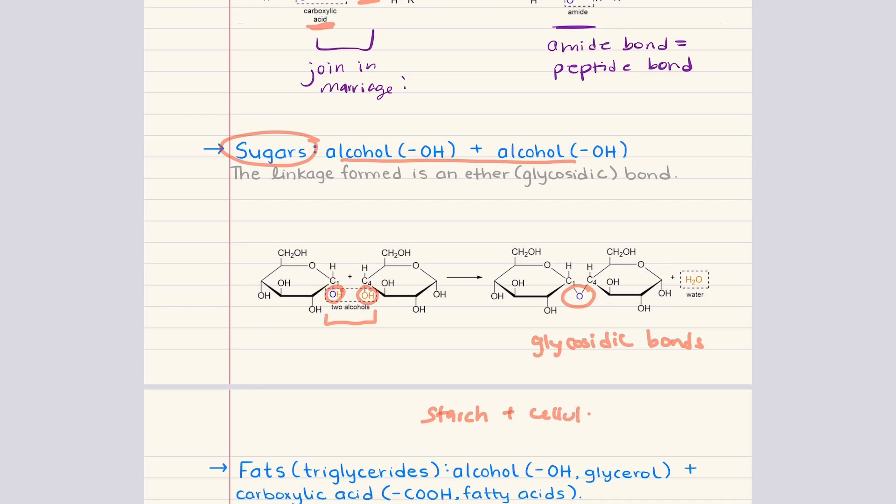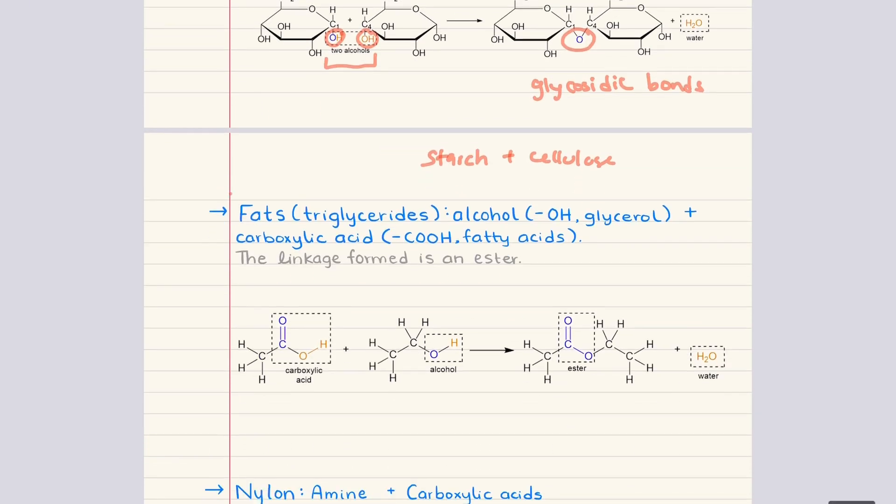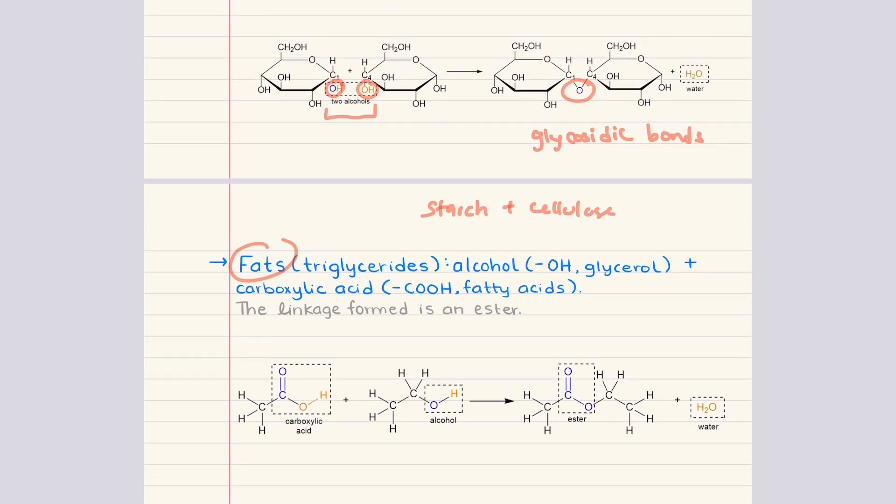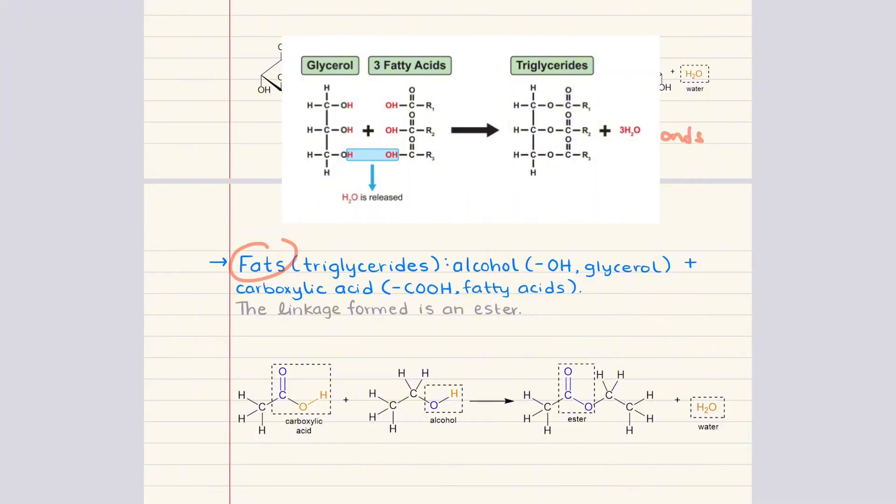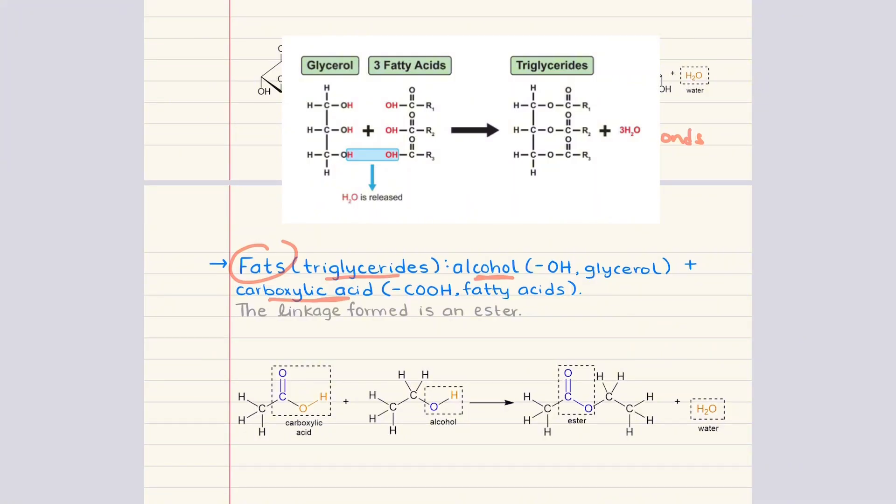Let's now move into triglycerides, which are fats. The chemistry here again mirrors what we saw earlier with synthetic polymers. A triglyceride forms when a glycerol molecule, which contains three alcohol groups, reacts with three fatty acids, each of which contains a carboxylic acid group. The alcohol carboxylic acid pairing undergoes a condensation reaction to form an ester linkage. And as a result, a single triglyceride contains three ester linkages, each formed by releasing a molecule of water.